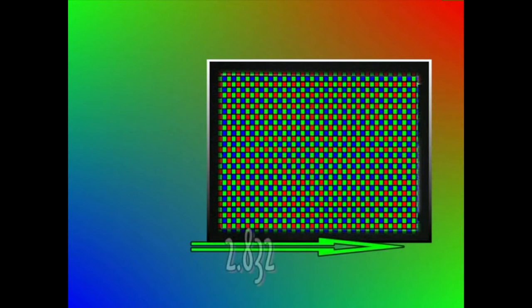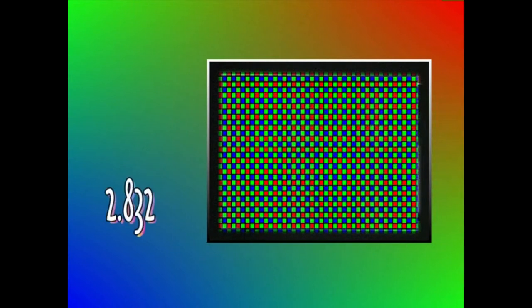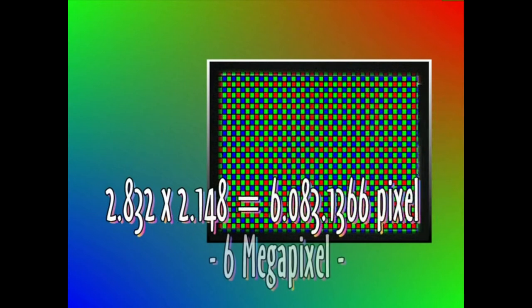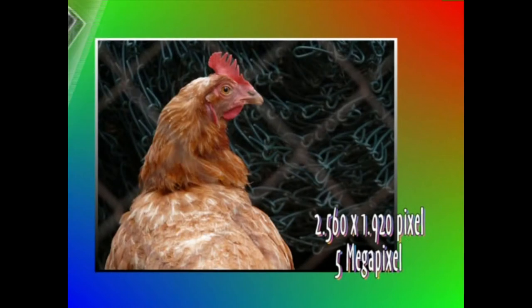Biderketaren biderkatzaileek puntuak adierazten dituzte: batek lerro horizontalekoak eta besteak lerro bertikalekoak. Biderketa eginez gero, 6 milioi puntuko edo 6 megapixeleko bereizmena duela egiaztatuko genuke. Zenbaki hori zenbat eta handiagoa izan, orduan eta kalitate handiagoa izango dute ararekin egindako argazkiek.